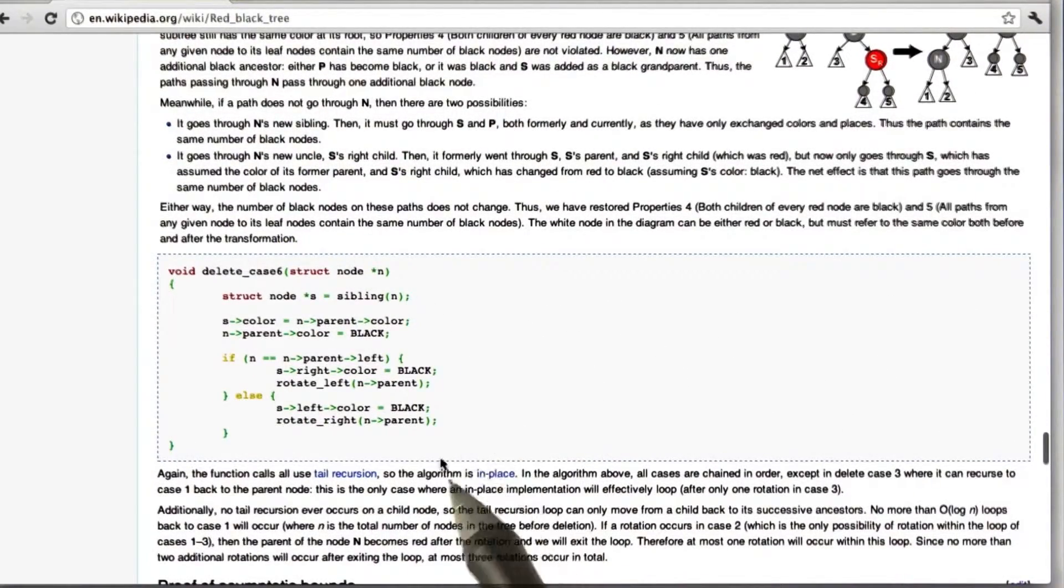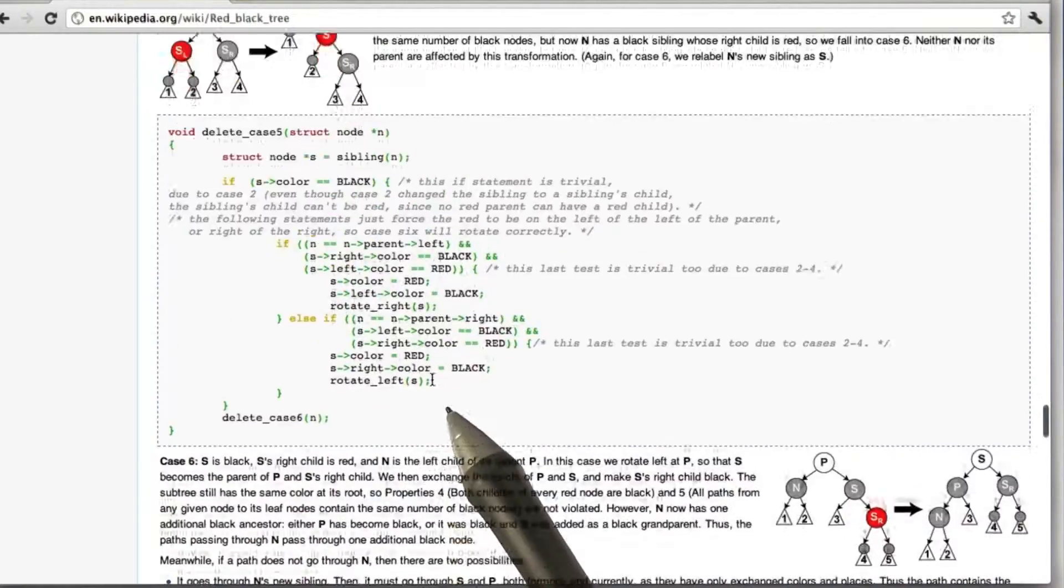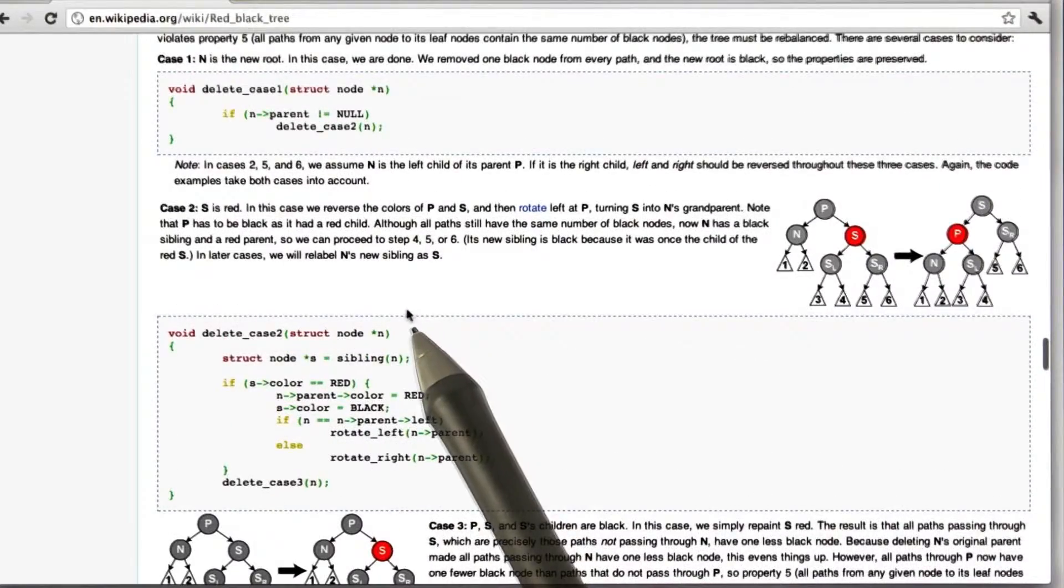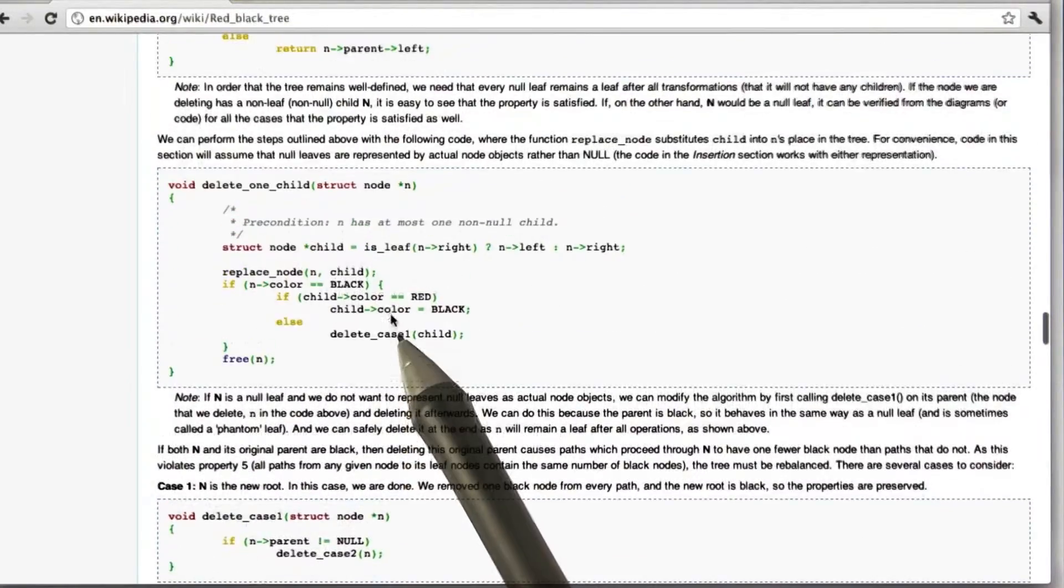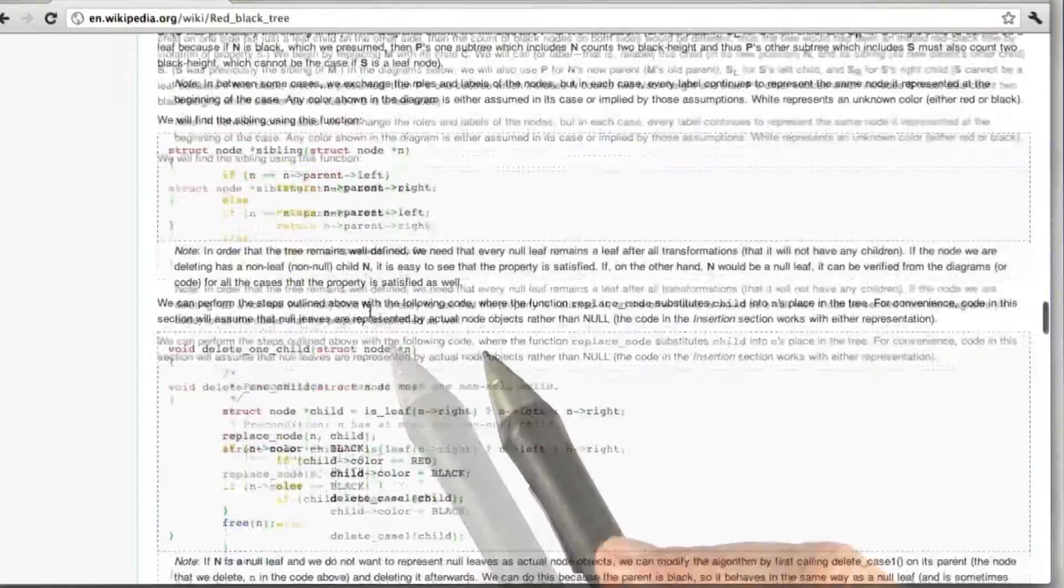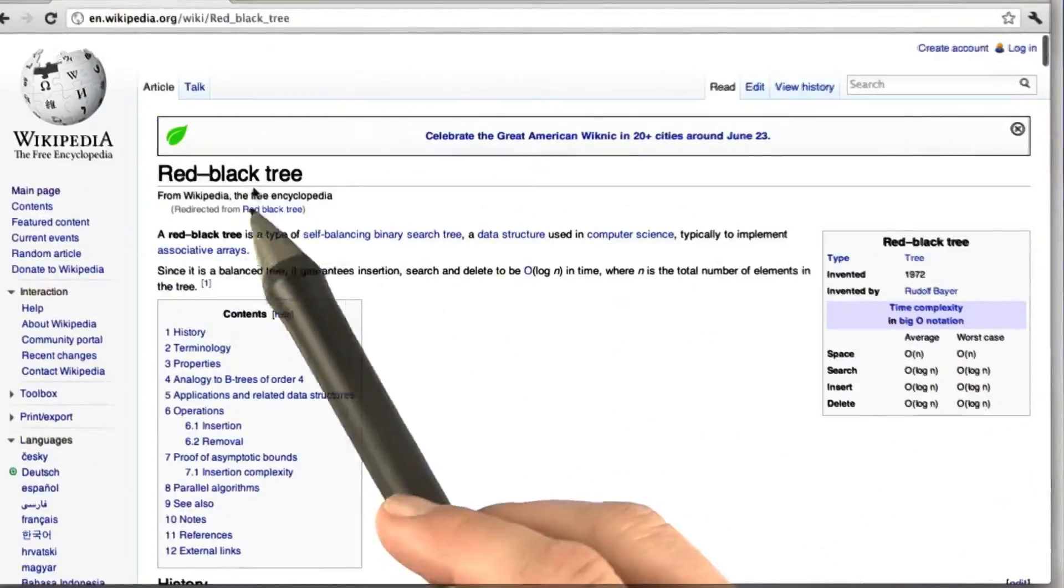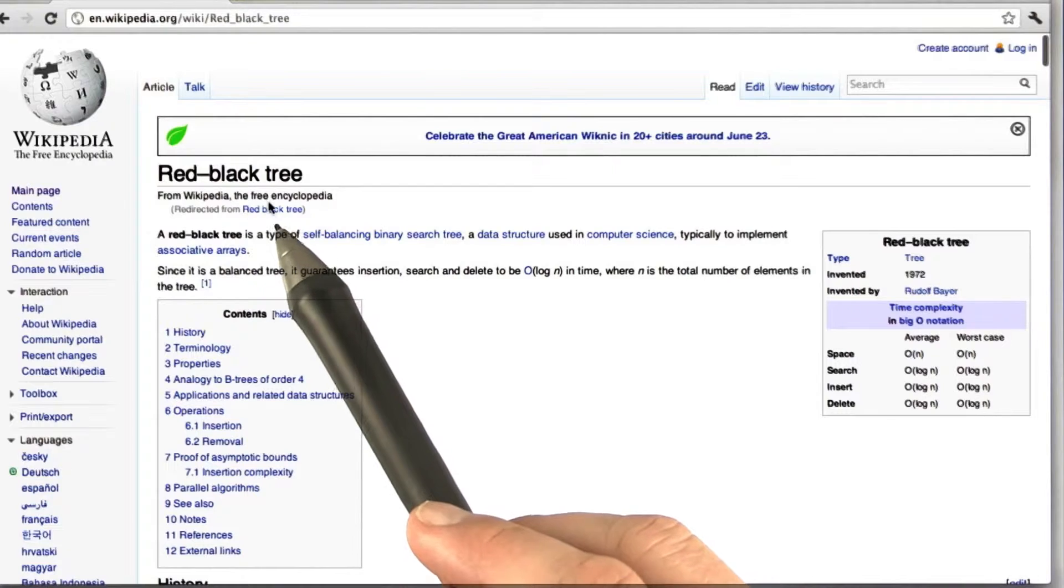And of course, you can imagine how easy it is to make mistakes in any of these cases. You would have some pointer pointing to the wrong node, and you would easily create lots and lots of time bombs, which is why we normally do not implement red-black trees, but we rather rely on red-black trees as implemented in some library.